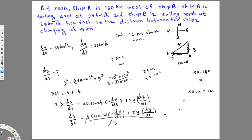Plugging all values in: (150 − 140) is 10, and −dx/dt is −35. Y is 100 and dy/dt is 25. Z is √10100. Calculating this gives dZ/dt ≈ 21.39 kilometers per hour. The unit is kilometers per hour because it's dZ/dt — distance divided by time.